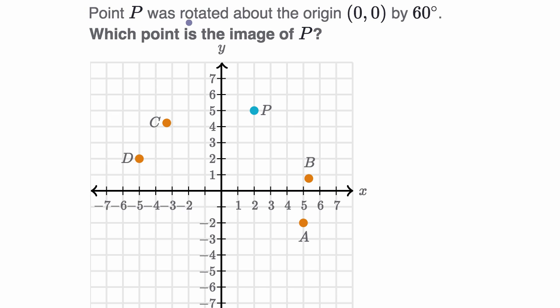We're told that point P was rotated about the origin (0,0) by 60 degrees. Which point is the image of P? Pause this video and see if you can figure that out.